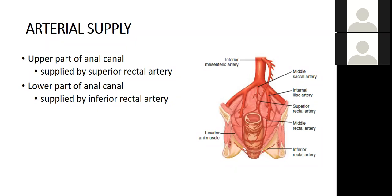Which sphincter is cut during fissurectomy with sphincterotomy? The internal sphincter is cut — only the lower part, up to where the fissure extends. Why? To relieve sphincter spasm, which is maintaining the fissure and causing pain. When you perform sphincterotomy, the sphincter retracts and the fissure heals.